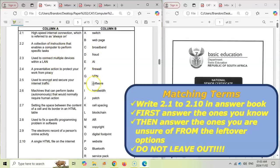Well, that one is definitely software. So we're going to mark that off. A single HTML file on the internet, that's definitely a web page. And you mark off the ones that you definitely know. And then you come back to the ones that you don't know and then see what's left over from the list of options. So that's what I would do for the matching terms.